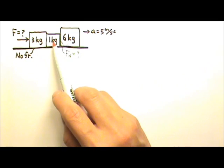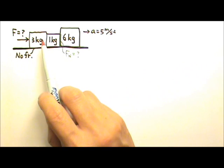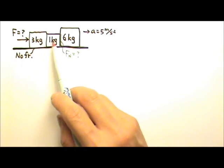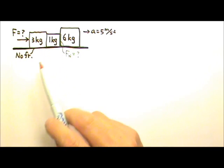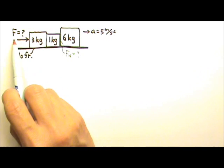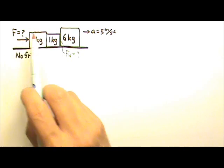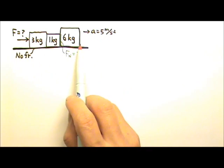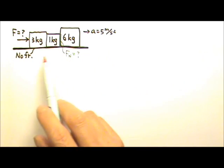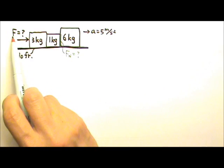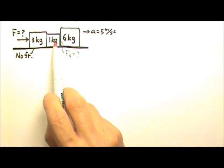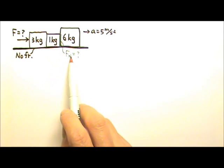Here we have three blocks of wet ice. Since they are blocks of wet ice, we can ignore the friction between the ice and the table. Somebody comes here and pushes with this horizontal force F, so the blocks accelerate to the right at 5 meters per second squared. We're looking for the pushing force and the normal force between the 1 kilogram and the 6 kilogram blocks.